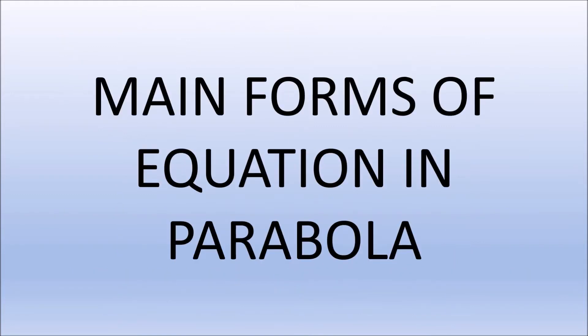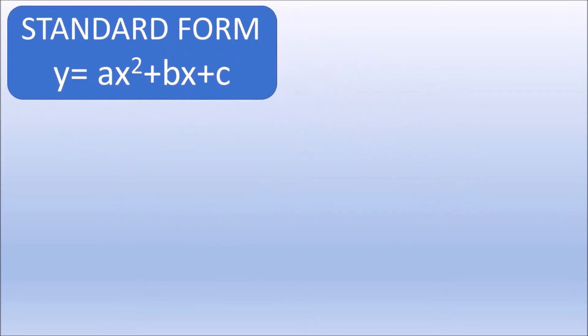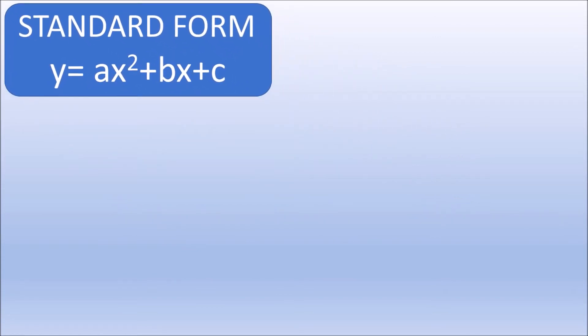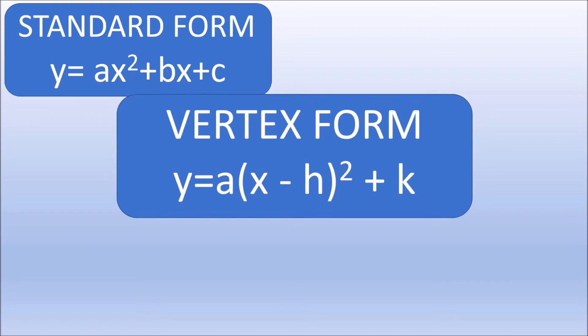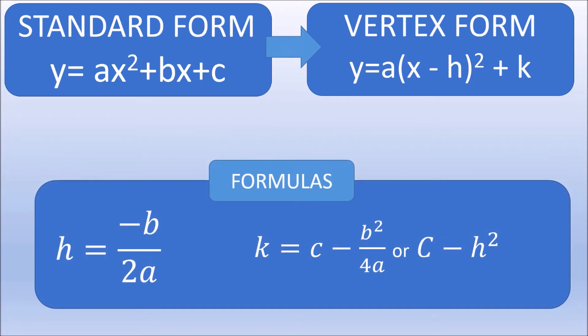There are two main forms of equation for the parabola. First is the standard form which is the one we're used to seeing. Second is the vertex form of a parabola with its vertex at (h,k). To convert standard form to vertex form, just remember these formulas to find the value of (h,k) known as the vertex.